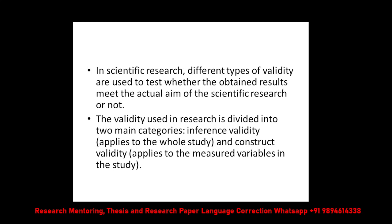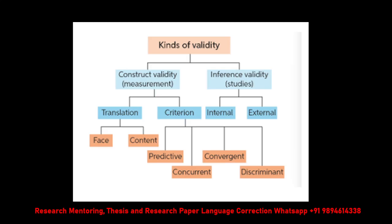Validity used in research is divided into two main categories. First is inference validity, which applies to the whole study. Second is construct validity, which applies to the measured variables in the study and further divides into different categories. Construct validity is further divided into translation validity and criterion validity. Translation validity breaks down into face validity and content validity.